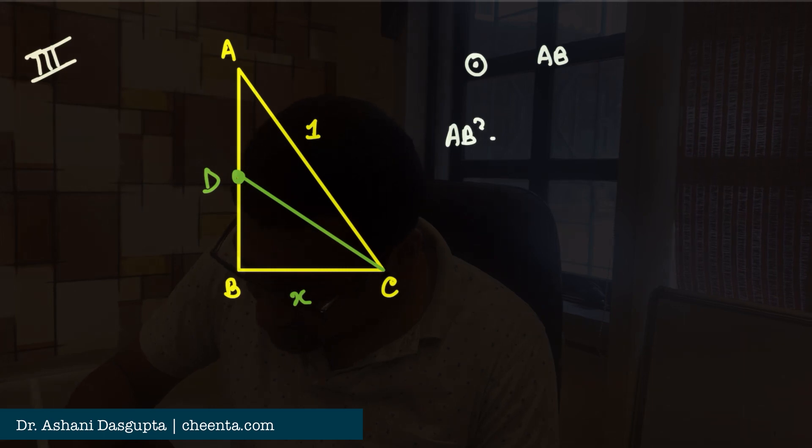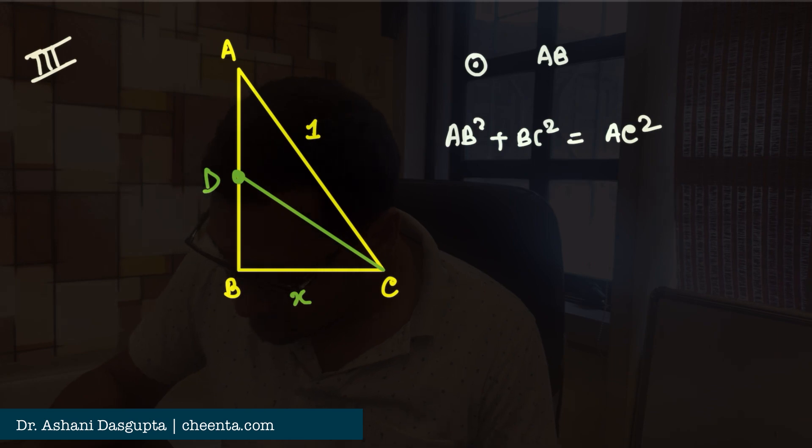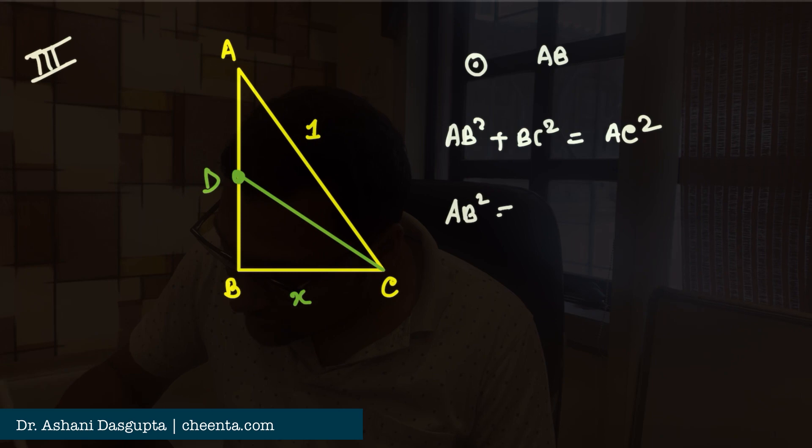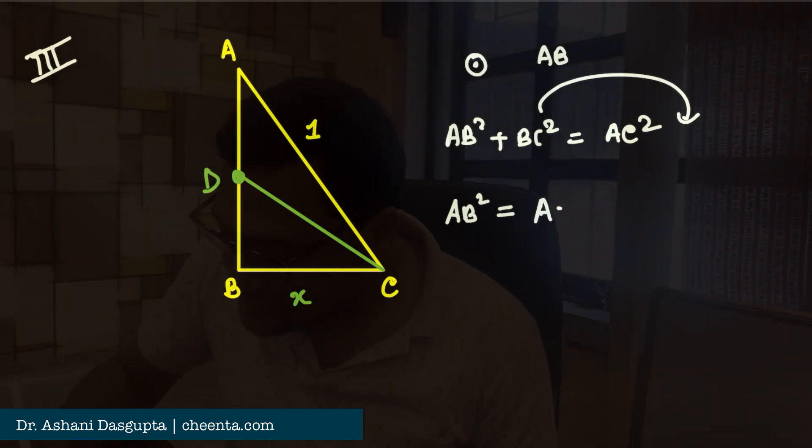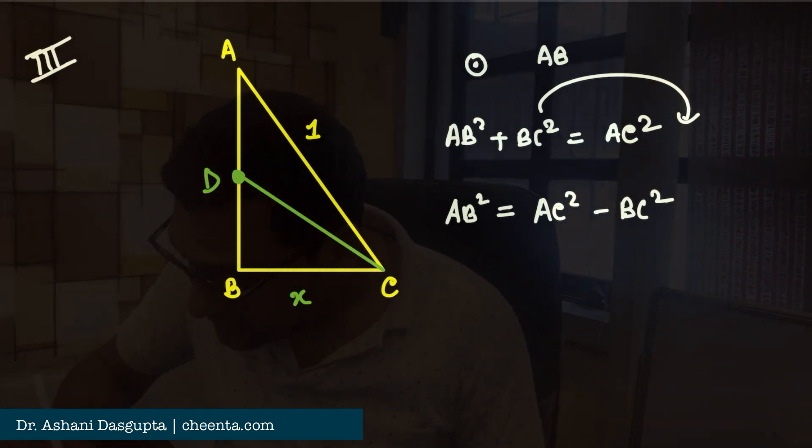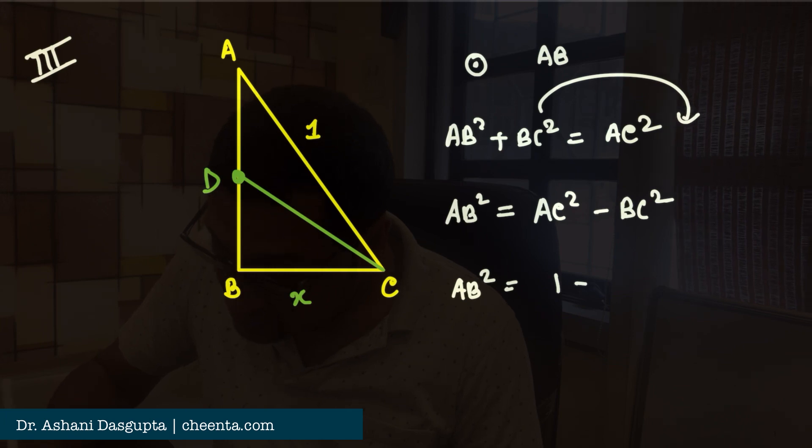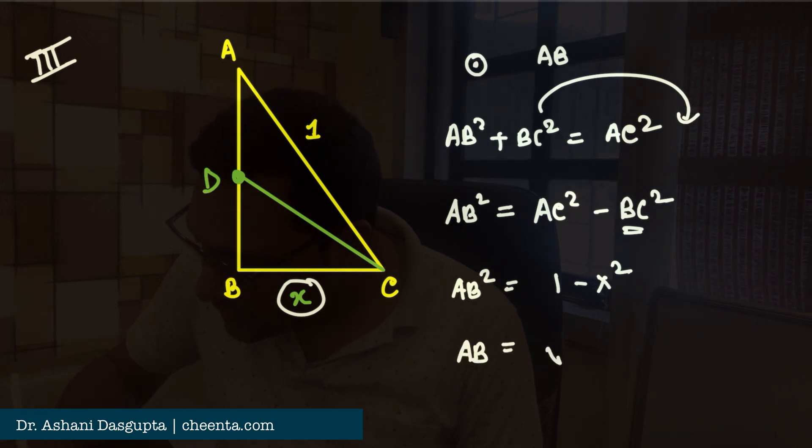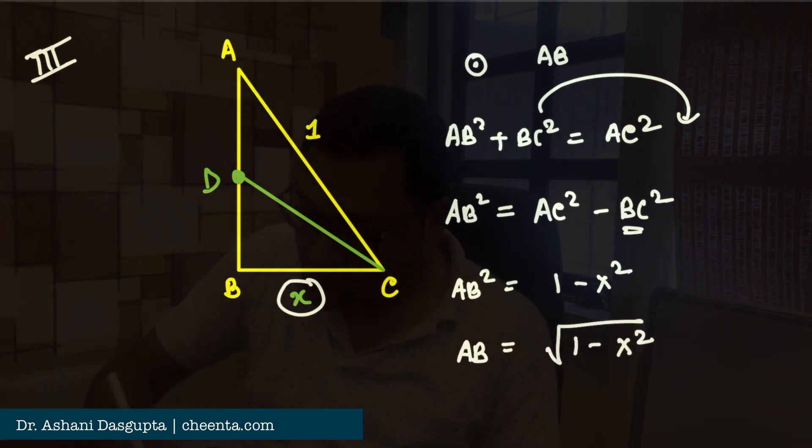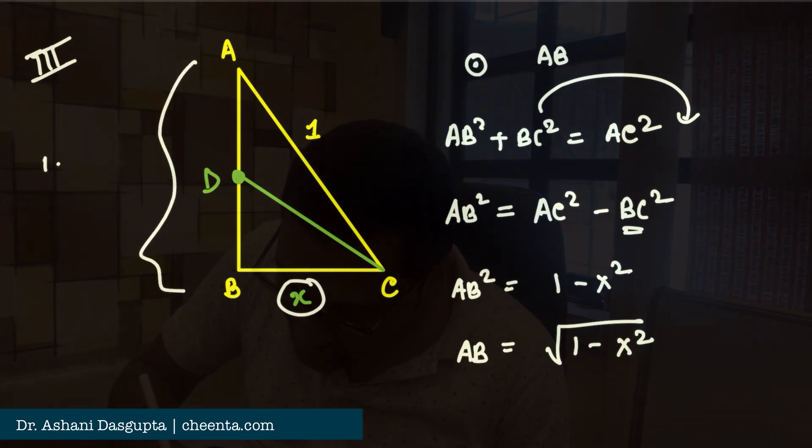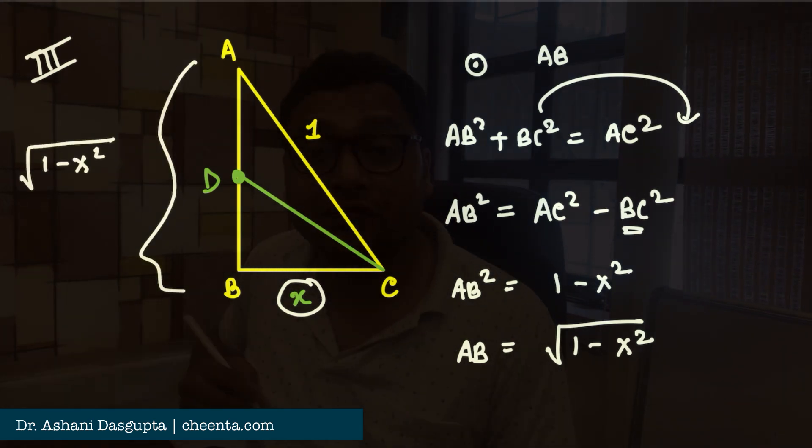So, the first step is to find out AB. We use Pythagoras theorem. AB² + BC² is equal to AC². We know this. So, AB² = AC² - BC². Now, AC is 1. So, we have AB² equal to 1 - BC is X. So, 1 - X². Or, AB is equal to square root of 1 - X². So, this entire length is square root of 1 - X². That's great.